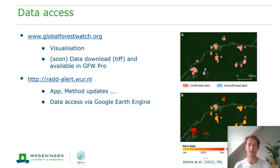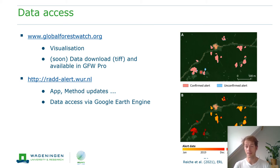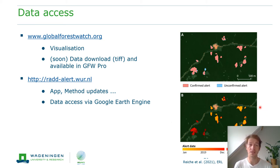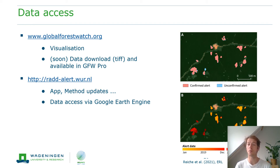How are RADALERTS distributed? We distribute them similarly to other forest disturbance alerts: we detect changes, provide a level of confirmation — unconfirmed, low confidence, or high confidence — and provide the date when the change was first detected. The data is currently available at Global Forest Watch for visualization, and very soon will also be available for download and in Global Forest Watch Pro for analysis. The data is also available on our website.